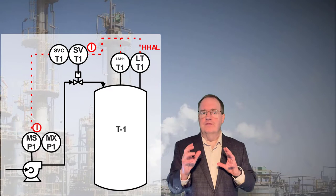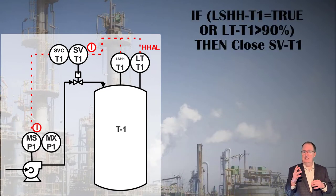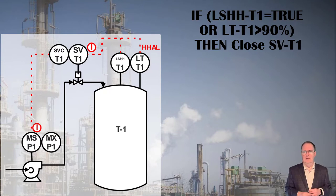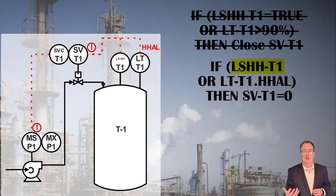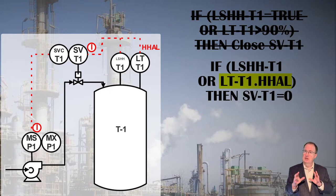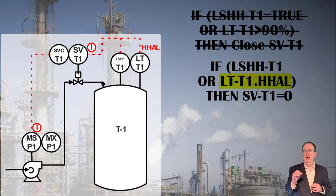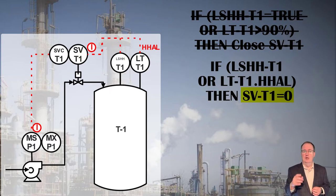Back to our tank example. The first interlock can be written: if LSH-H-T1 is true OR LT-T1 is greater than 90%, then close SVT1. We can shorten that expression to how it would appear when configured in an actual control system. LSH-HT1 is a boolean or digital variable and therefore true or false, and so is the high-high alarm on LT-T1, indicated by the dot-HHA-L suffix. LT-T1 is a level from 0 to 100, but LT-T1.HHAL is the high alarm on that level and is either true or false.